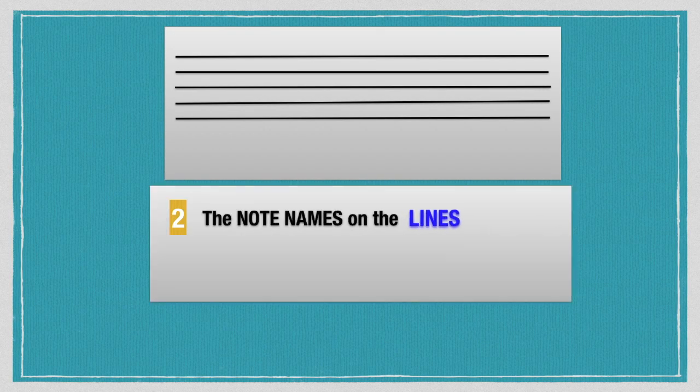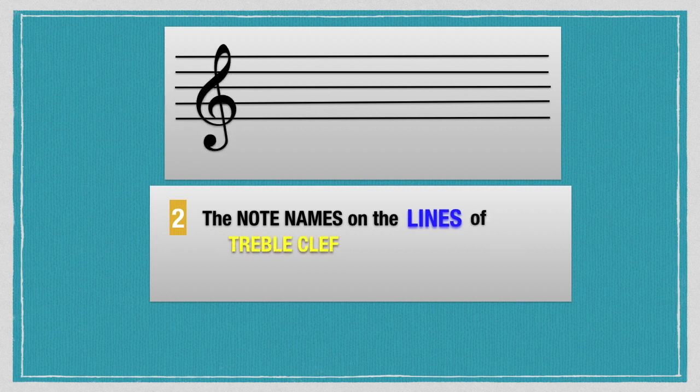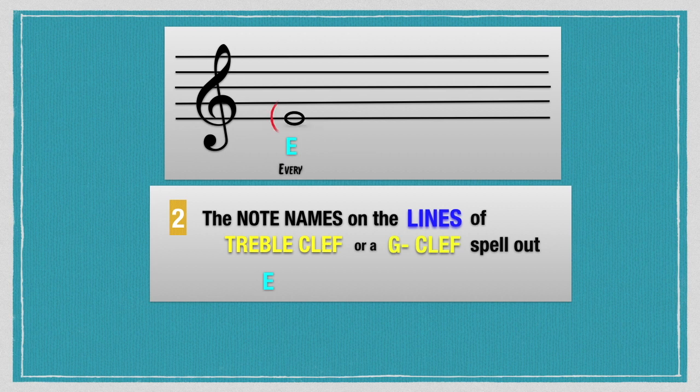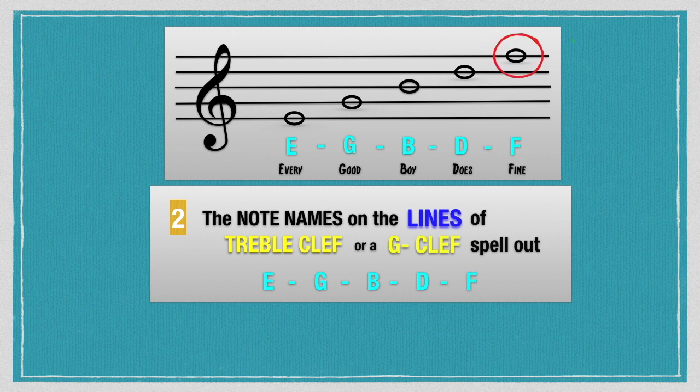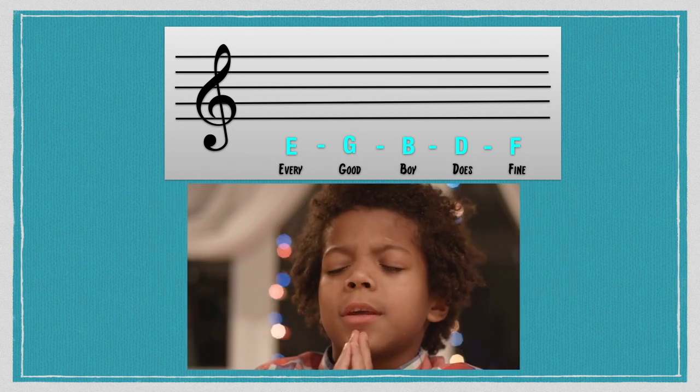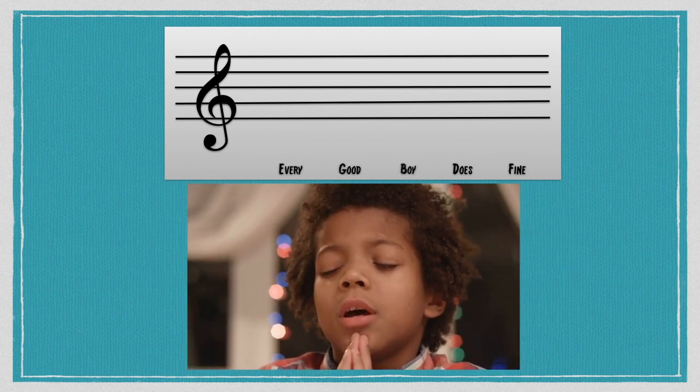The note names on the lines of the treble clef or G clef spell out as E stands for every on line 1, G stands for good on line 2, B stands for boy on line 3, D stands for does on line 4, and F stands for fine on line 5. Every good boy does fine.